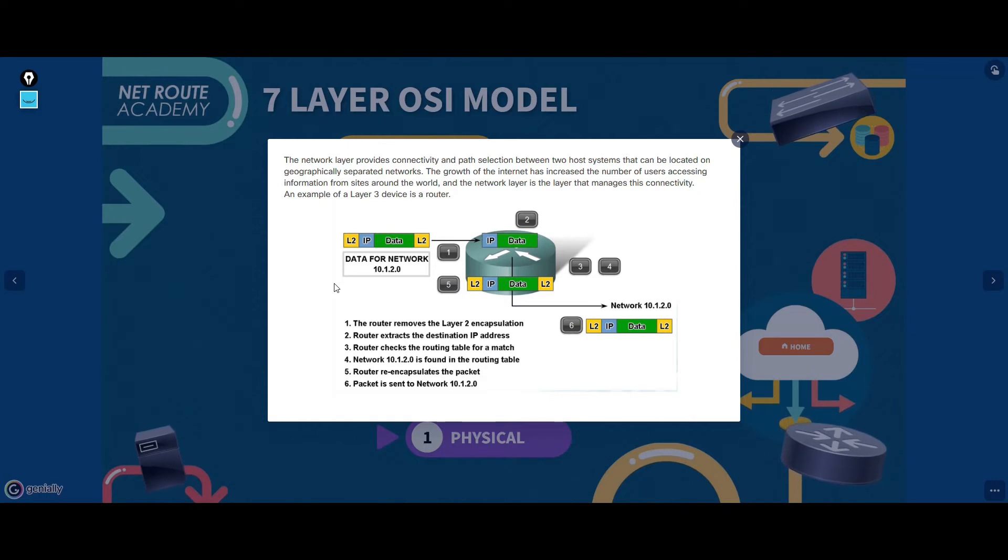The network layer header identifies the sending and receiving hosts by their IP addresses. An IP address is an address assigned to each node on a network, which the network layer uses to uniquely identify them across multiple networks.